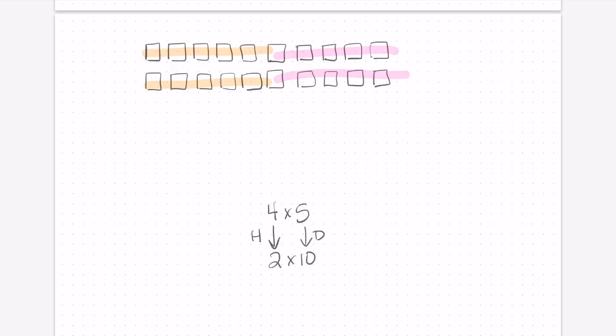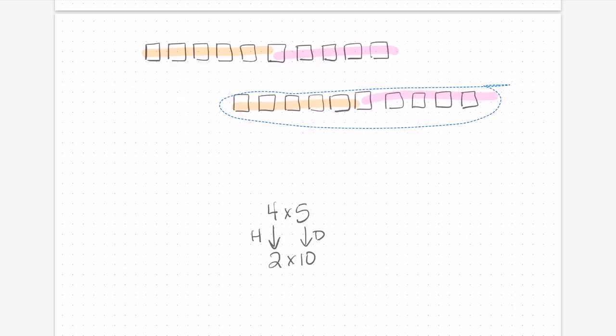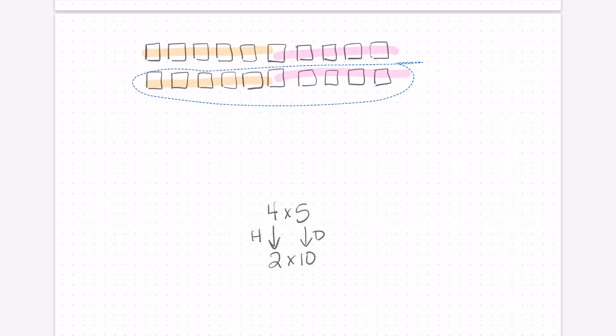Now if we wanted, we could do it again. We could half the number of rows again, and we could add them up beside here. I don't have enough room on my screen, but you get the idea. That would take us to, if we did it again, we're going to half that to make one row of 20.